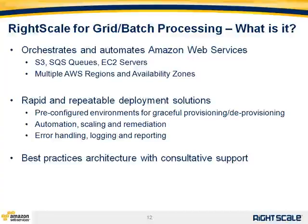What RightScale has done, consistent with our approach with all things Amazon, is look for ways to stitch together, automate, and orchestrate Amazon resources around specific verticals or workloads. What you'll see today is focused automation and orchestration around three key Amazon services: S3 (Simple Storage Service), SQS (their queuing service), and of course the EC2 Compute Cloud.